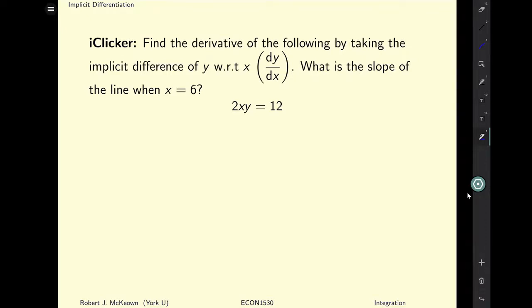Let's take the implicit derivative here. Notice that we're going to have to use the product rule, and we always use the chain rule when we're taking the implicit derivative. So I'm going to get 2y plus 2xy prime equals 0.